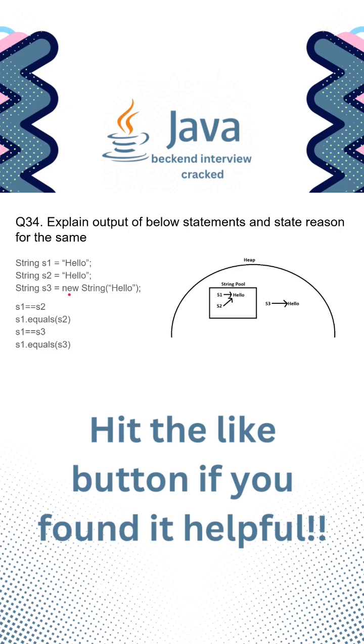This diagram depicts the placing of these string values in the string pool and heap. Since s1 was the first hello string, it is stored in the pool with s1 pointing to hello.